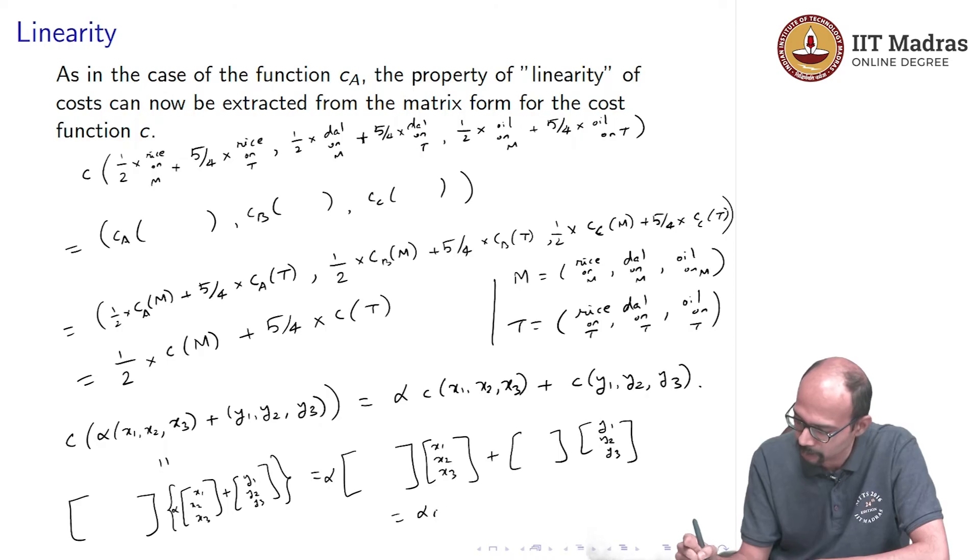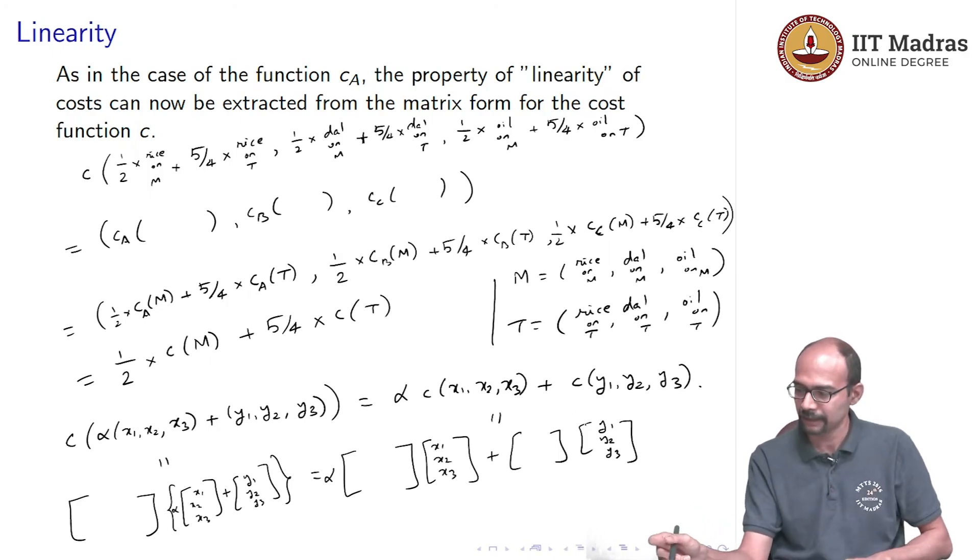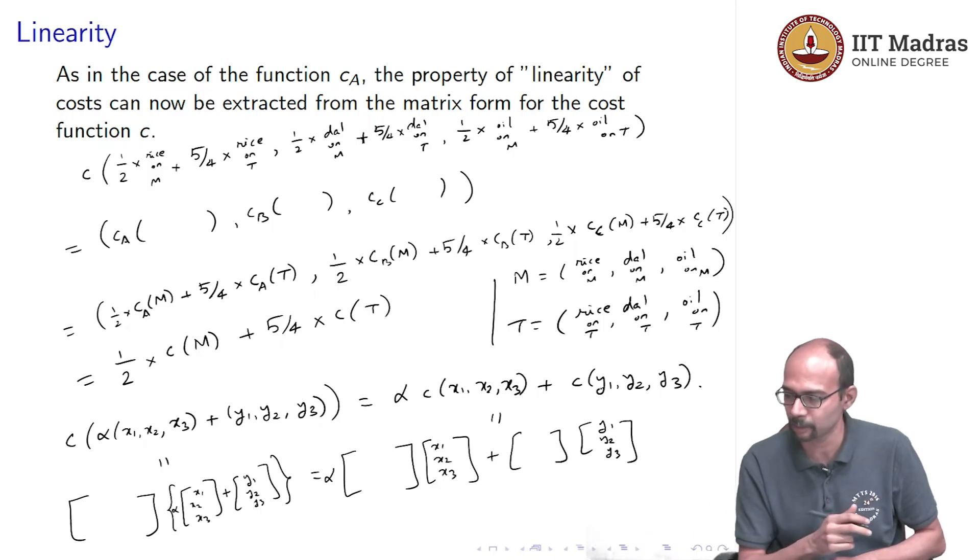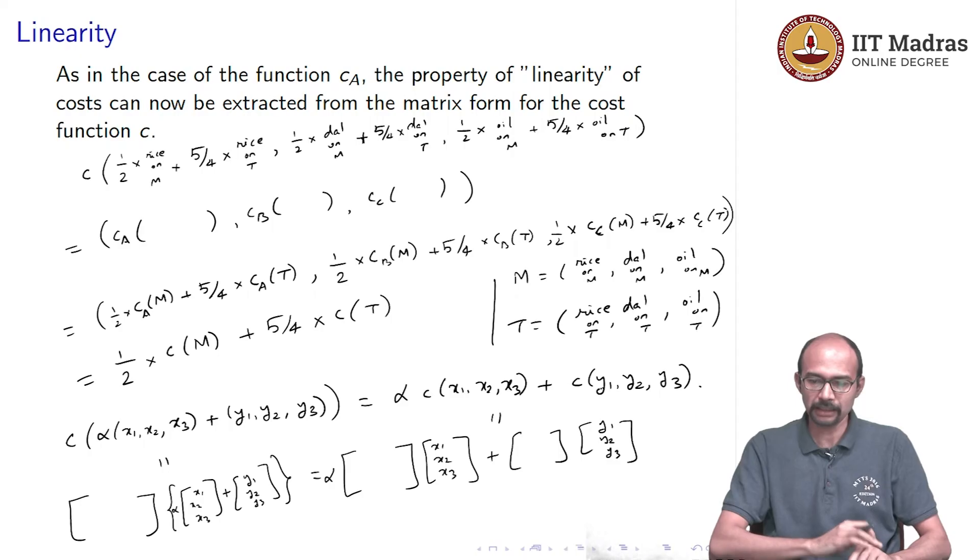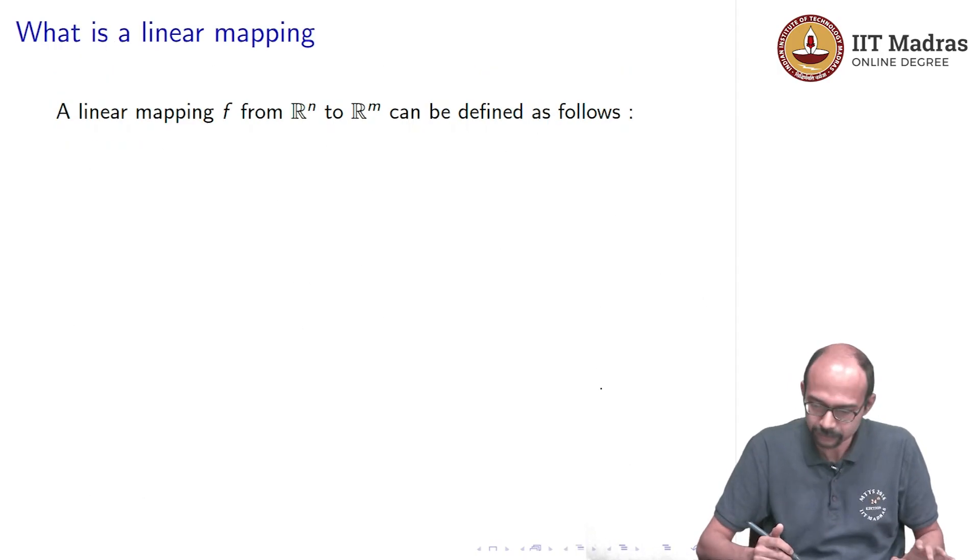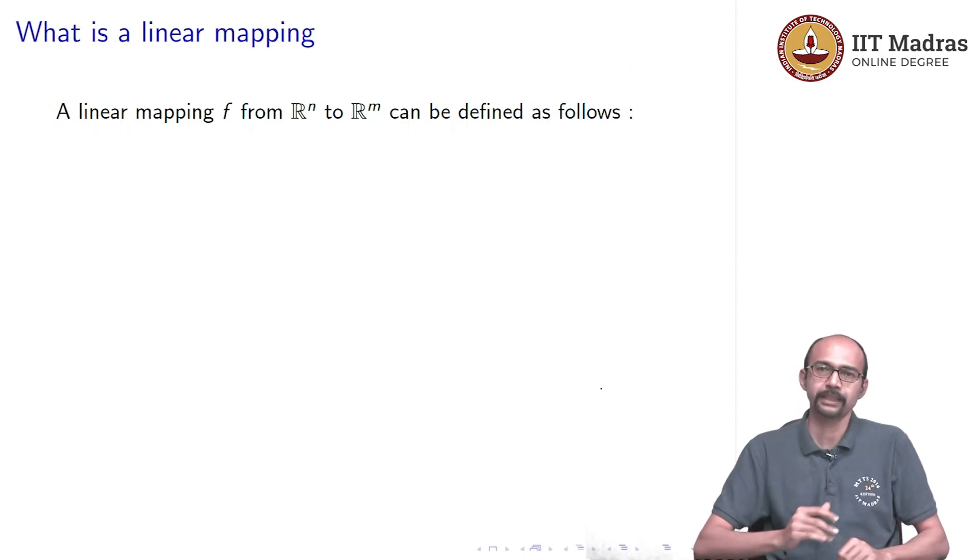And then of course, this I know is alpha times C of (x1, x2, x3). I mean, it is the same as the expression on top. It is equal to this expression. This part is here and the second part is corresponding to C of (y1, y2, y3). So, this is what we mean by linearity. So, now we can talk in general, what is a linear mapping?